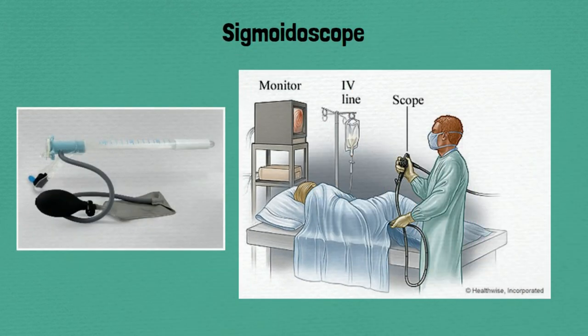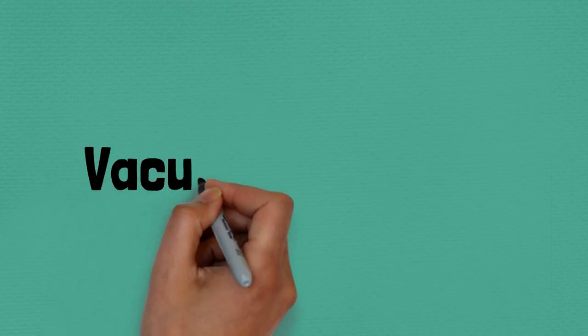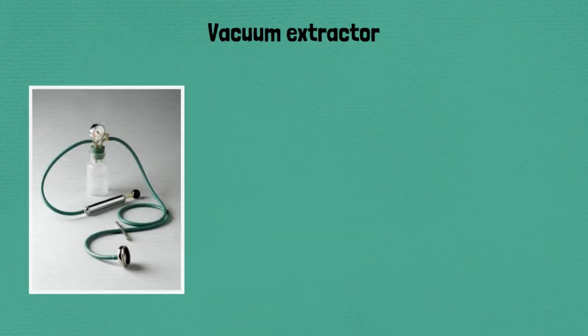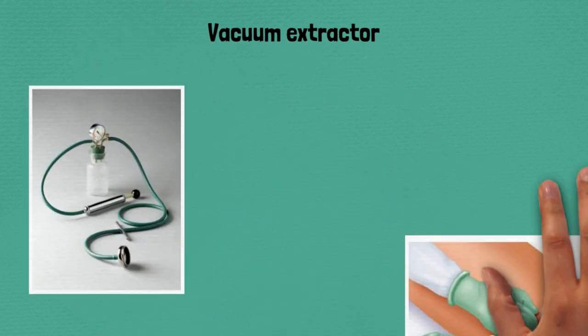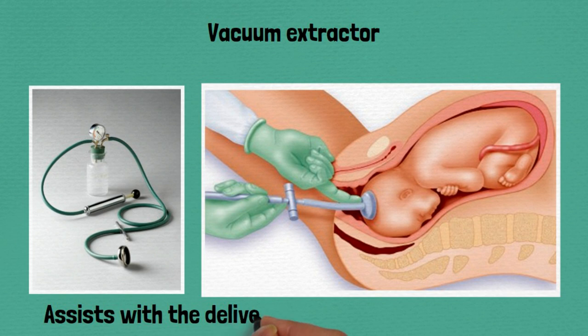Eighty-two: sigmoidoscope, examines the rectum and lower part of the colon for abnormalities. Eighty-three: vacuum extractor, assists with the delivery of a baby during childbirth.